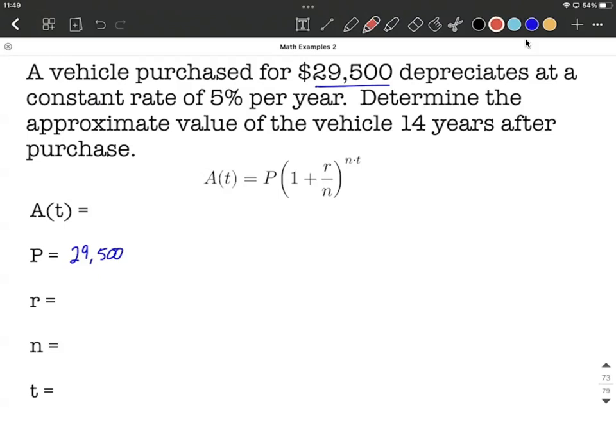It depreciates at a constant rate of 5% per year. So 5% is going to be our rate, but because this is depreciating, it's going to be a negative rate. Also, when we fill into this formula, we want to go from a percentage over to a decimal. So we're going to take our decimal point and move it over two places to the left.